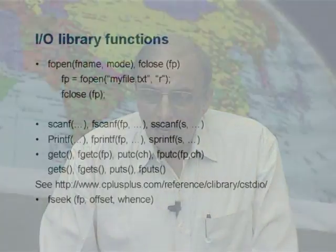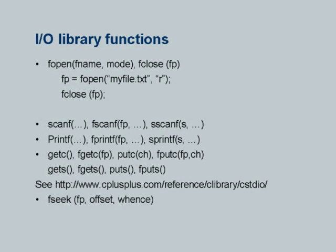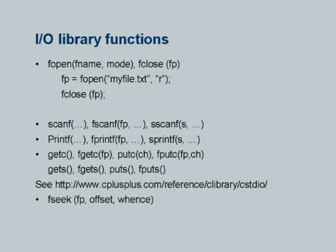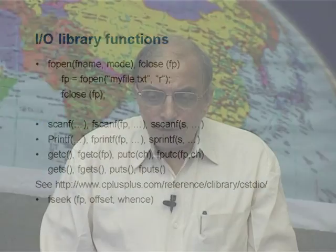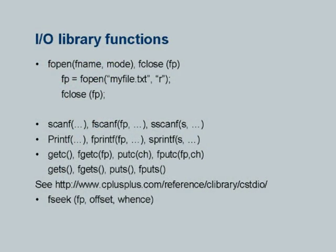Additionally, for direct access or random access files, you have a command called fseek, which is the way to set the file pointer to a specific position. You can define the position using an offset. When you say fseek, the position pointer is taken to point to the particular location given by the offset with respect to some point — that point can be the starting point, end point, or the current point — and that is why you have a third parameter called whence.